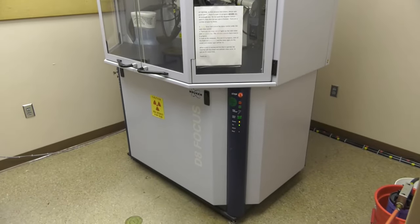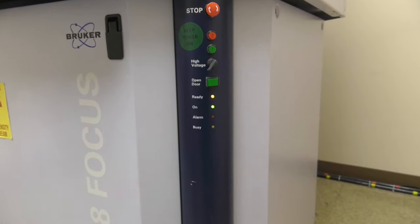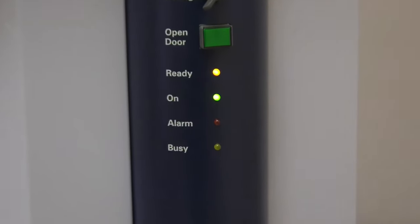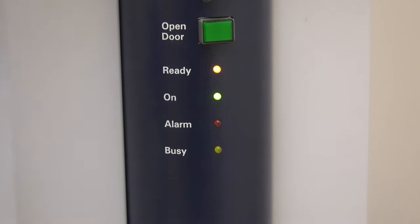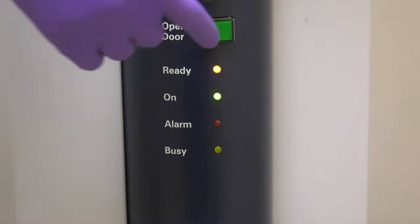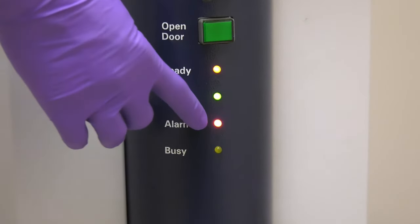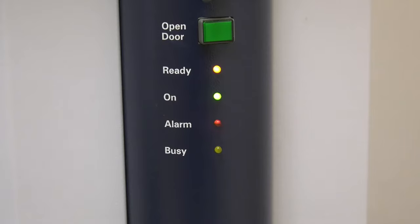Upon entering the XRD room, the user should take notice of the operational lights on the side of the instrument. The ready and on lights should be illuminated, while the alarm and busy lights should be off. To unlock the doors, the user presses the open door button. The alarm light will blink while the doors remain unlocked.